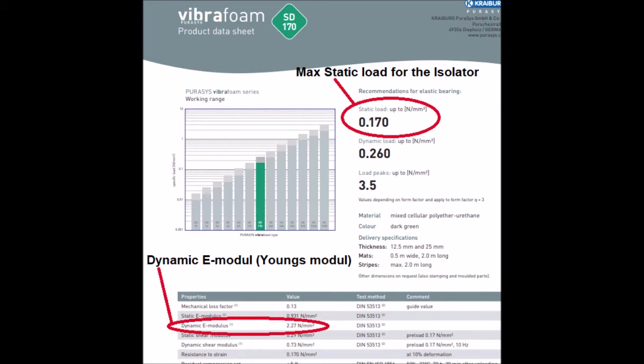You will need some data from your supplier of the isolator. The first thing you need is the max static load. It tells you how much weight your floor can take before it doesn't work anymore, or if you're unlucky your isolator will break. Here the static max load is 0.170 newton per square millimeter. The other data you need is the dynamic E-module or Young's module. Here it is 2.27 newton per square millimeter.